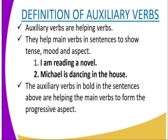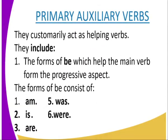The auxiliary verbs in those sentences help the main verb to form the progressive aspect. For instance, 'dancing' and 'reading' show the progressive aspect — meaning the action is ongoing. We begin with the primary auxiliary verbs, which customarily act as helping verbs.